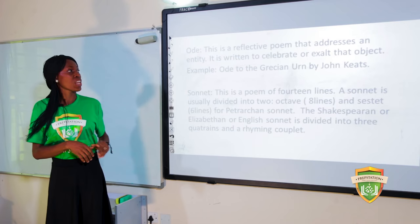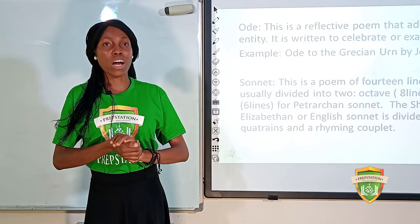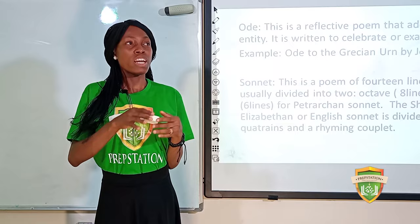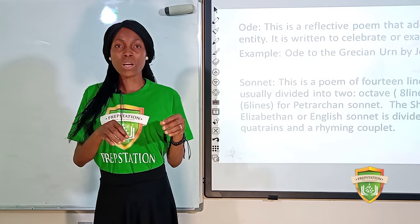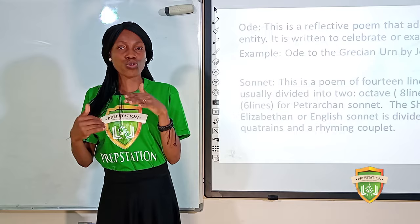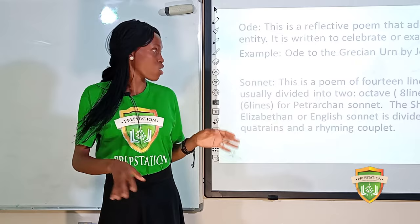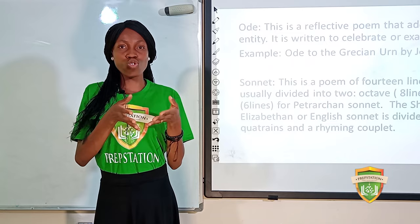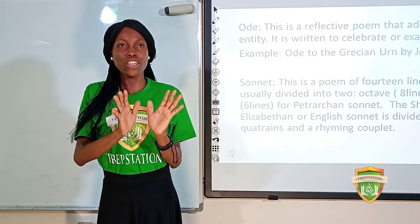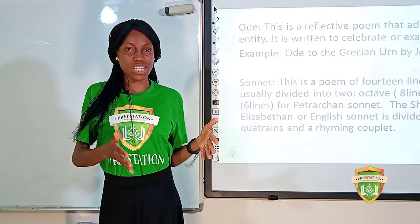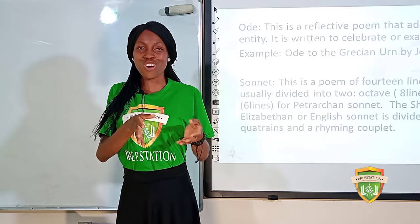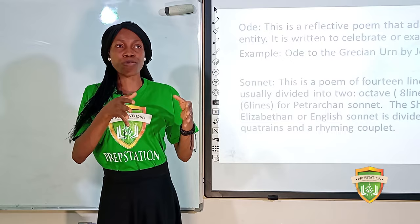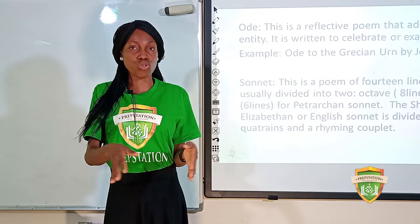An ode is a reflective poem that addresses an entity, written to celebrate or exalt that object. Sometimes the authors are unknown — for example, Salute to the Elephant, whose poet is unknown. Another example is Ode to a Grecian Urn by John Keats, in which Keats praises and describes the urn as though it were a living being, talking about its attributes.